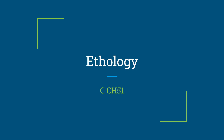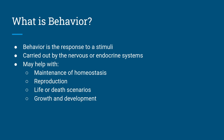Hello, today we're going to be going over ethology. Ethology is correlated to Campbell's chapter 51. Ethology is the study of behavior — animal behaviors — and behavior can be defined as the response to a stimulus. In animals, behavior is usually carried out with help or control from the nervous or endocrine systems. Behaviors will help with maintenance of homeostasis, help animals reproduce, make quick decisions in life or death scenarios, and will control growth and development.